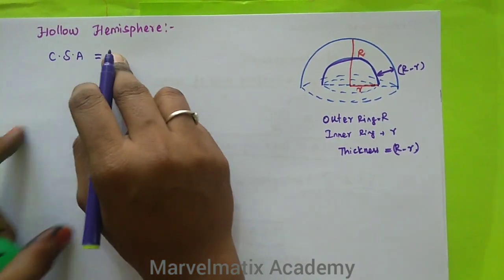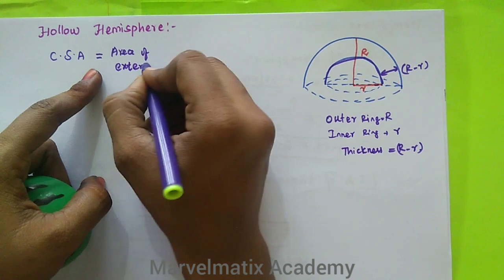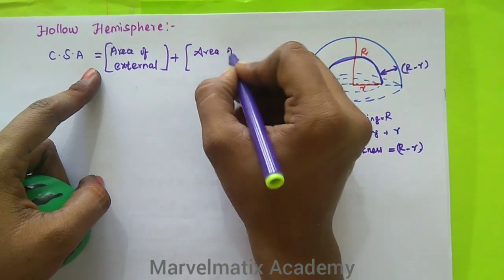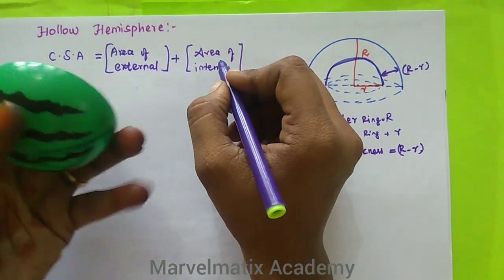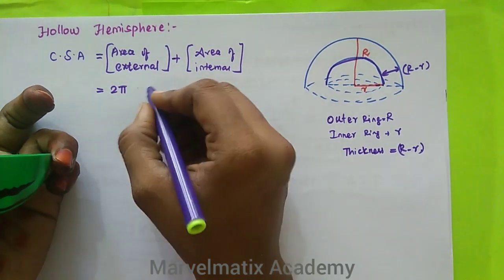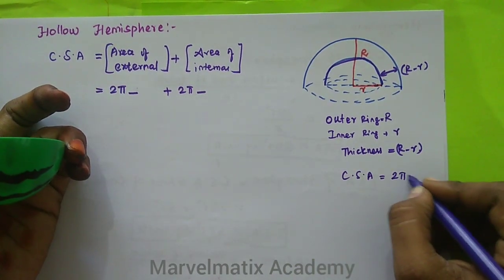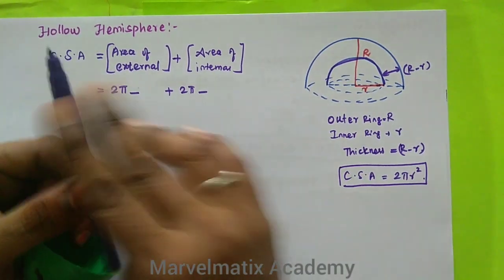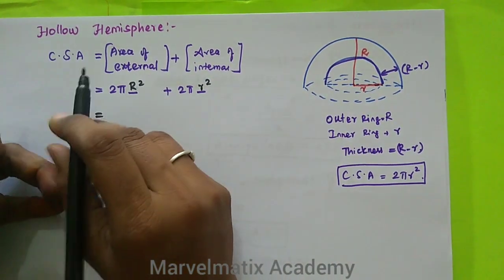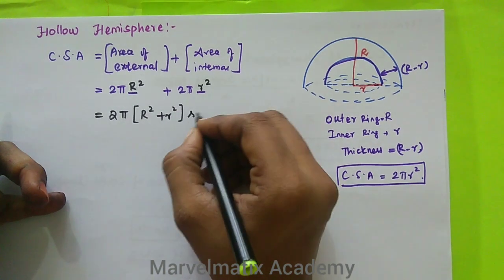CSA — that is the Curved Surface Area. The area of the external surface and the area of the internal surface. The formula is 2πR² plus 2πr², which gives us 2π(R² + r²) square units.